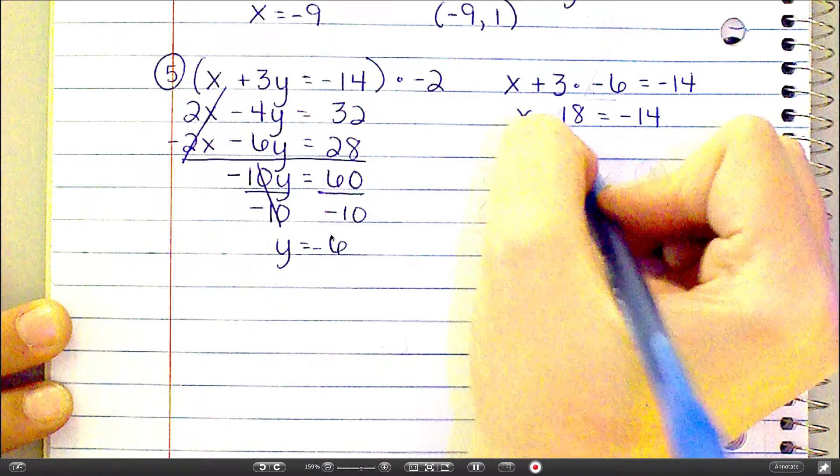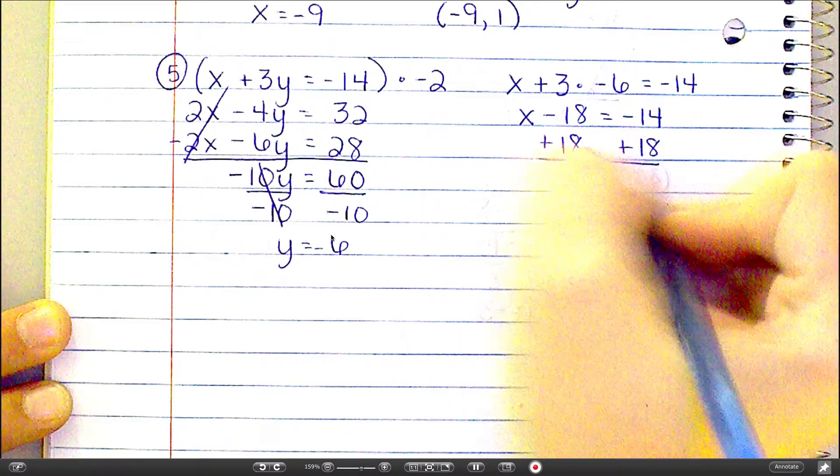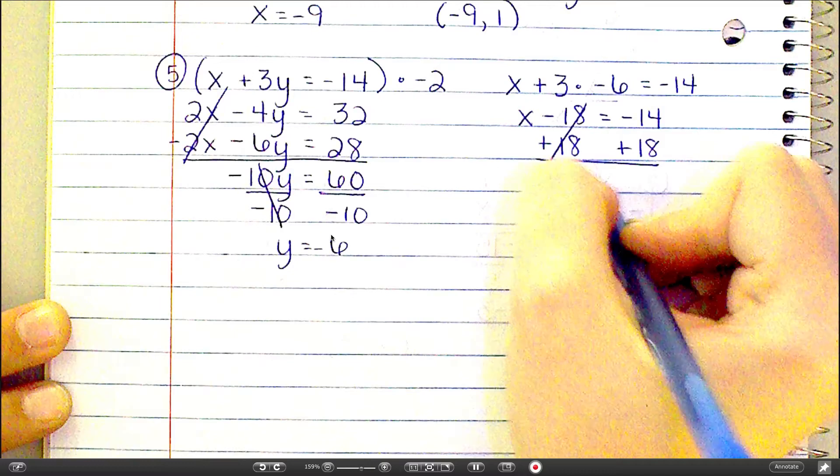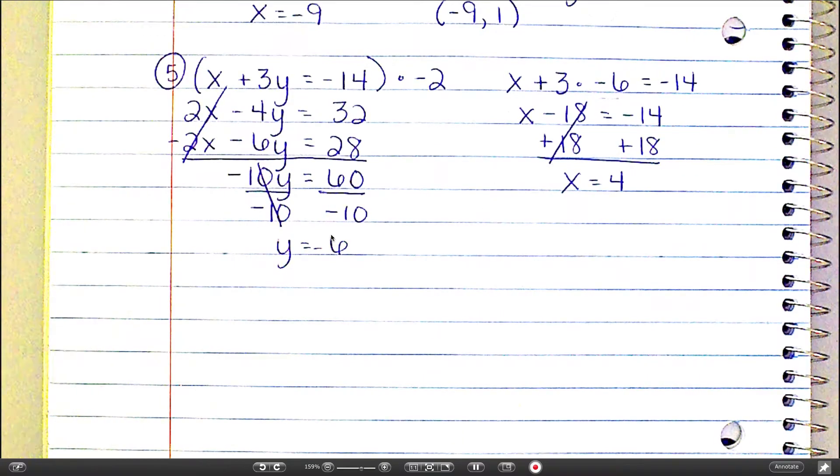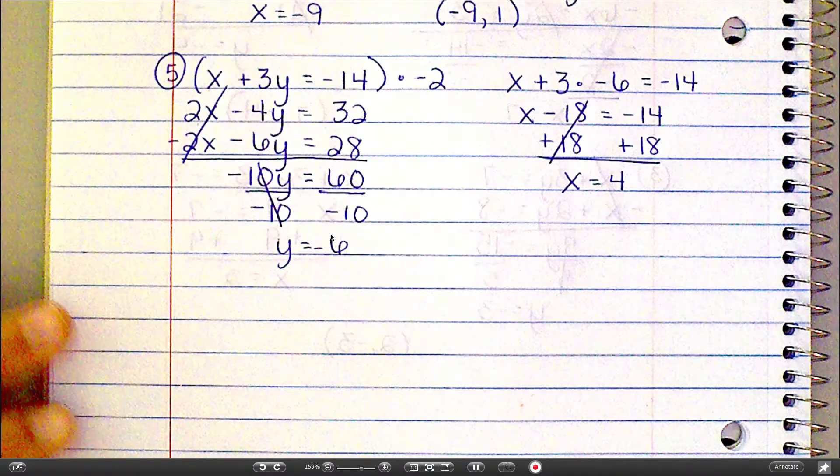Add the 18, and x equals positive 4. So final answer, 4 negative 6.